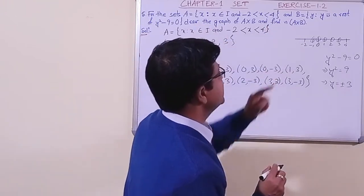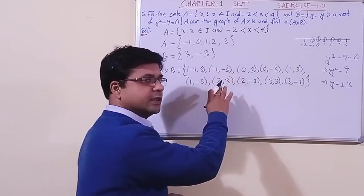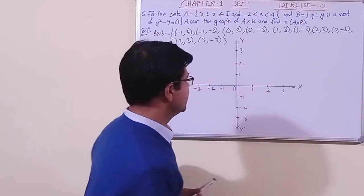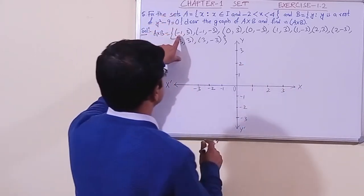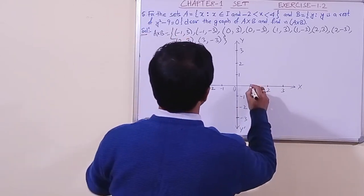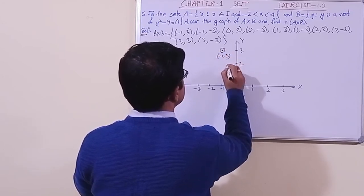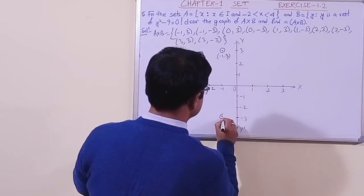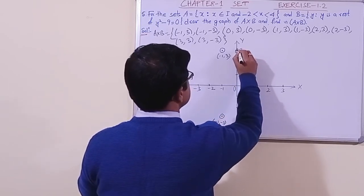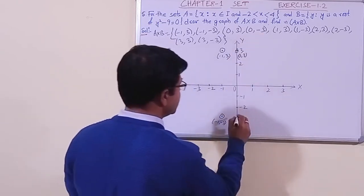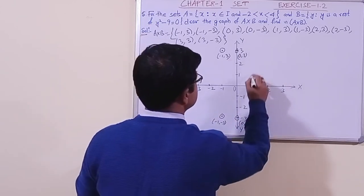Now we need to draw the graph and find the cardinal number. We have drawn the Cartesian plane with numbers marked on the number lines. Let us plot all the points. First (minus 1, 3) — minus 1 and 3 here. Then (minus 1, minus 3). Then (0, 3) — zero then three. Then (0, minus 3) — it will be here.